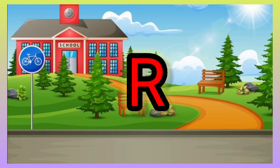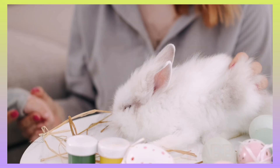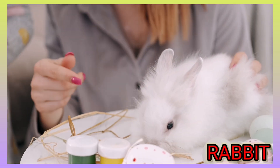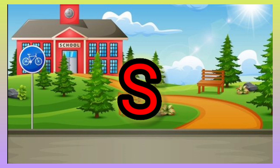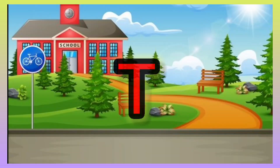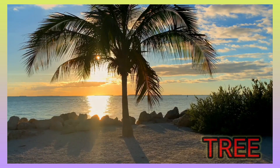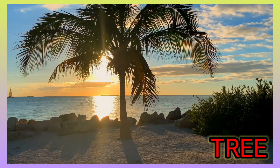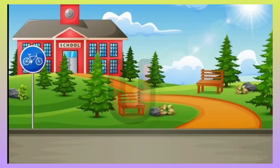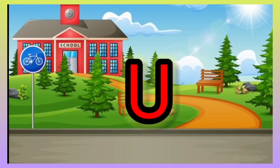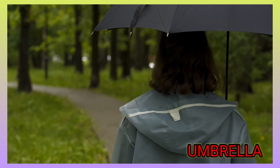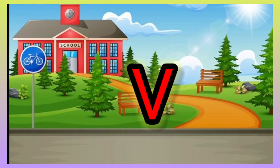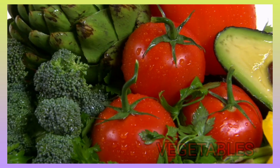R for rabbit. S for shun. T for tree. U for umbrella. V for vegetables.